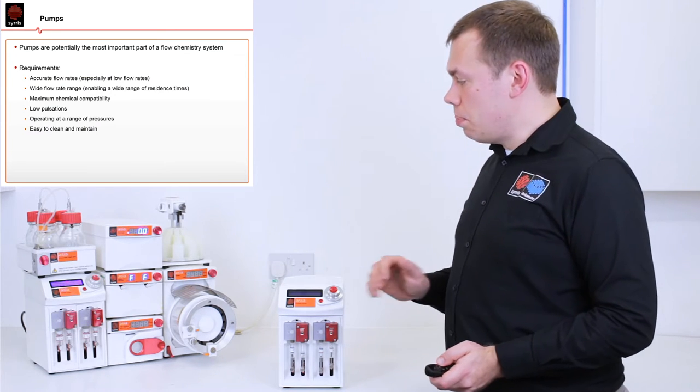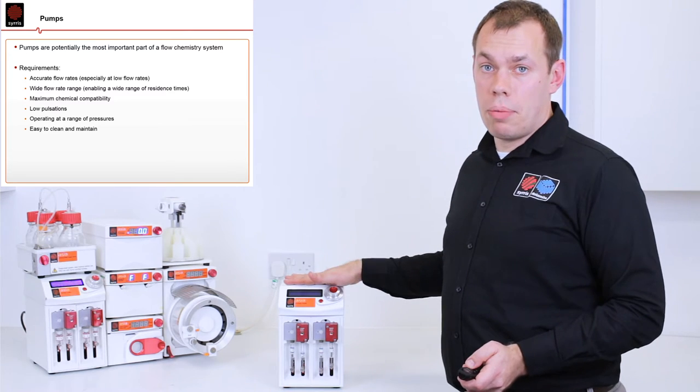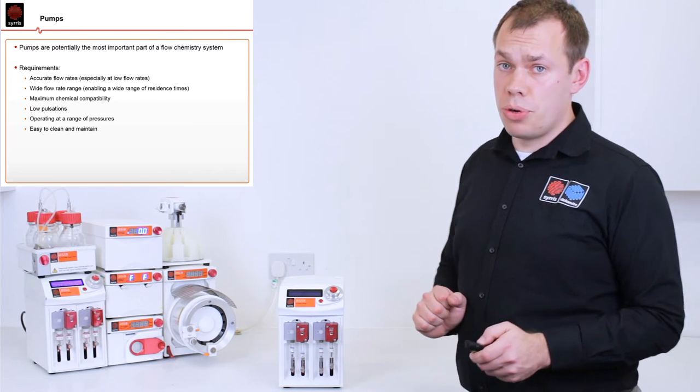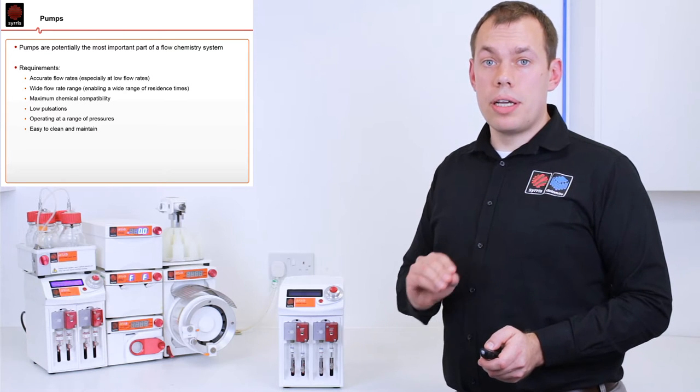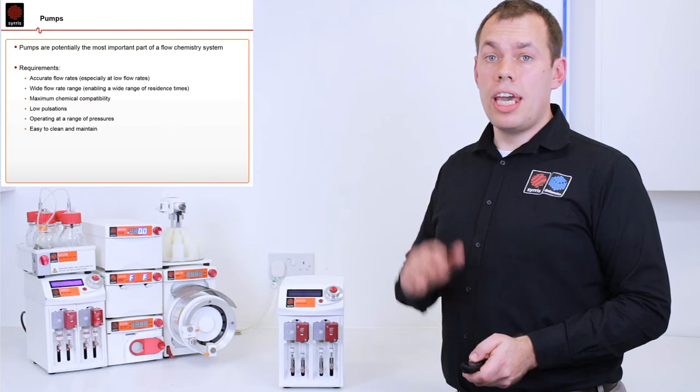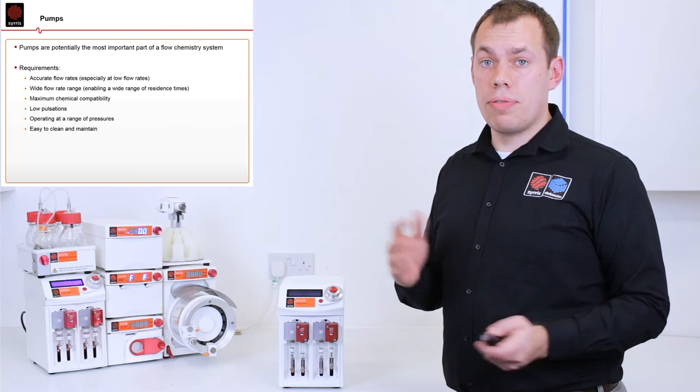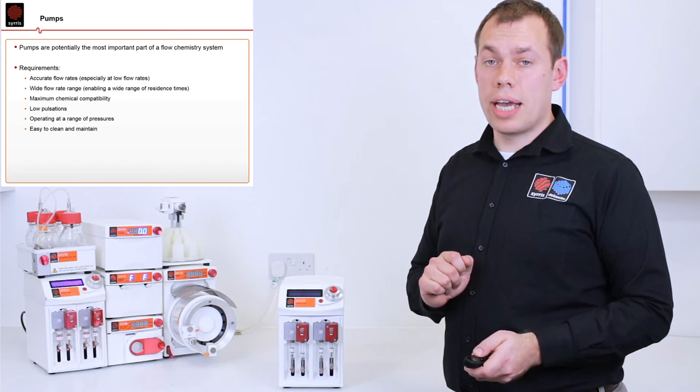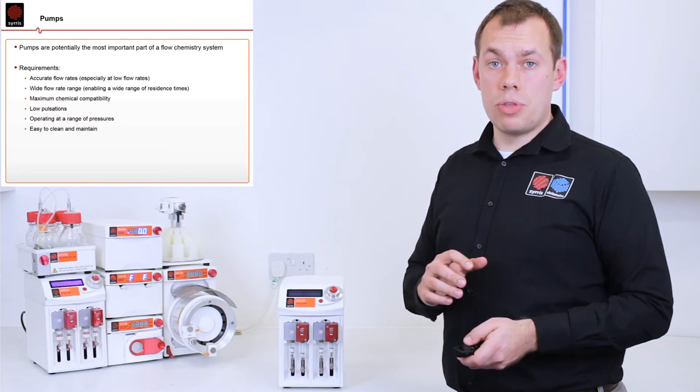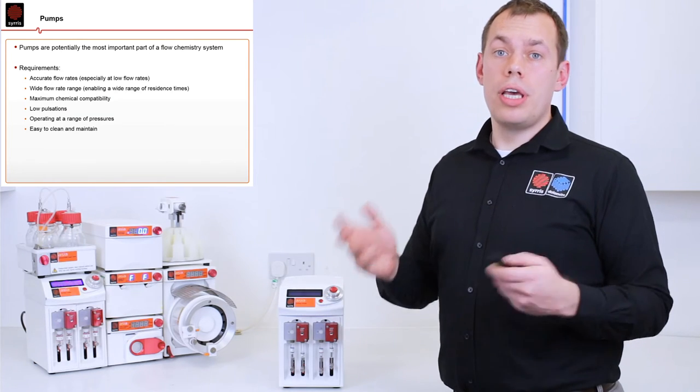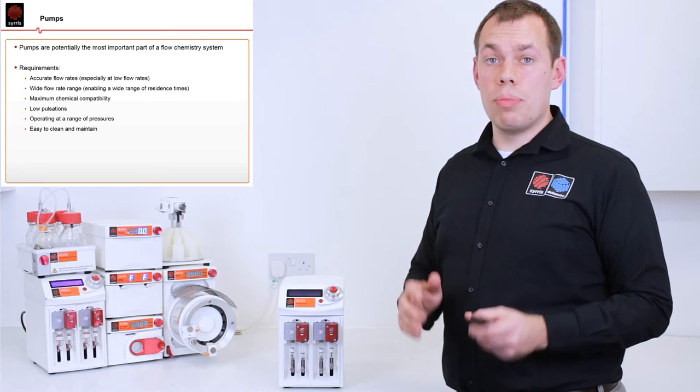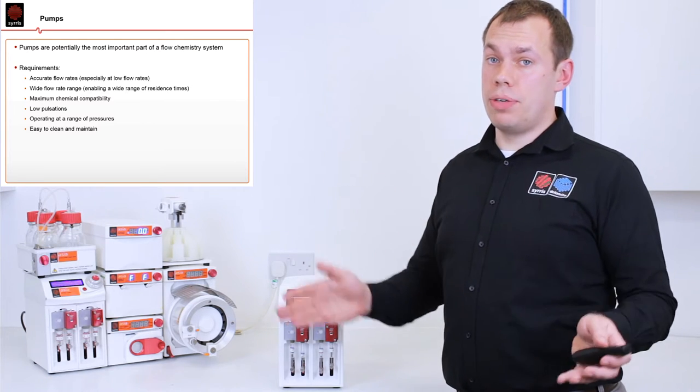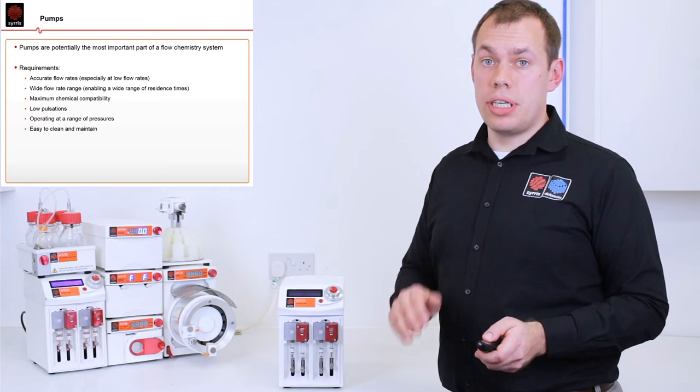Arguably, the most important part of the system is the pump. Why is the pump so important? In flow chemistry one of the key reaction parameters is the residence time. In order to vary your residence time you have two choices. You can change your type of reactors but then you will be limited by hardware or the easy solution is to vary the flow rate. So you want your pump to be able to deliver a wide range of flow rates with high accuracy and precision.